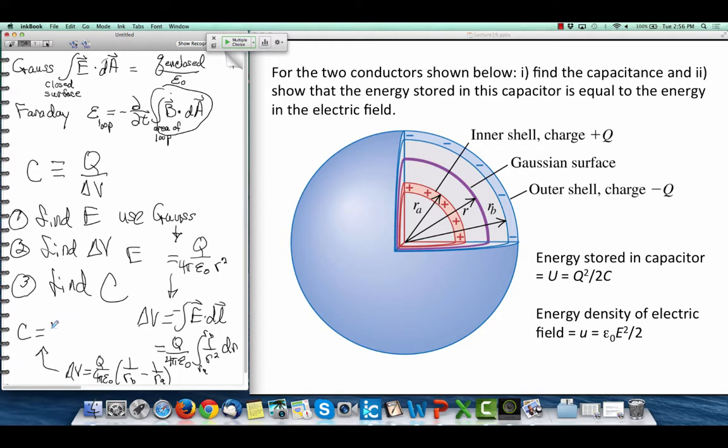On top, I have a 4 pi e zero. And, oh, what do I have? I have 1 over all of that. I'm not going to worry about what it is. 1 over all of that. So, that's the capacitance for this thing.